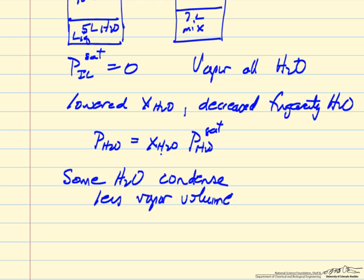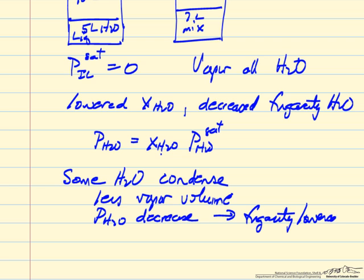But then additionally, some condenses because the pressure of the water decreases in the gas phase because the fugacity is lower. Fugacity is lowered in the liquid phase, which means it must be lower in the vapor phase to be at vapor-liquid equilibrium.